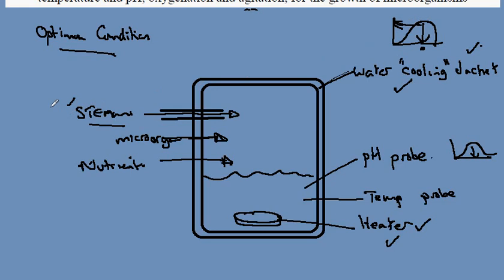So we've got a method to clean the tank, a method to introduce the microorganism, a tap to introduce the nutrient, probes to tell us about pH and temperature, and the heater with the water jacket so that we can control the temperature.